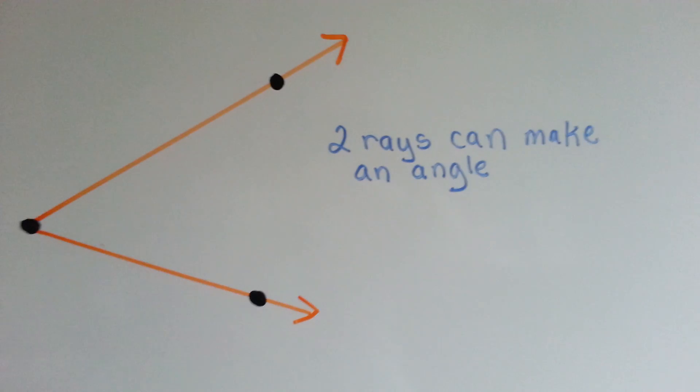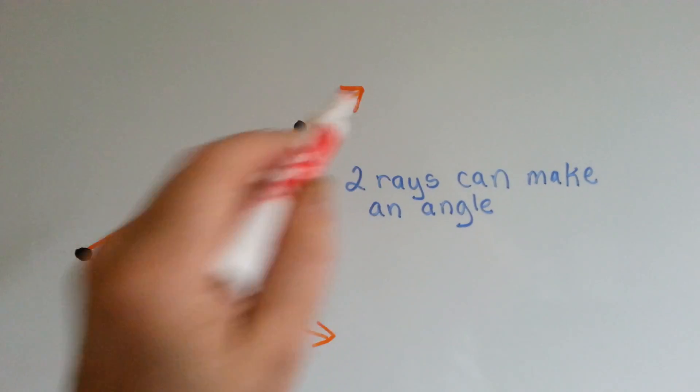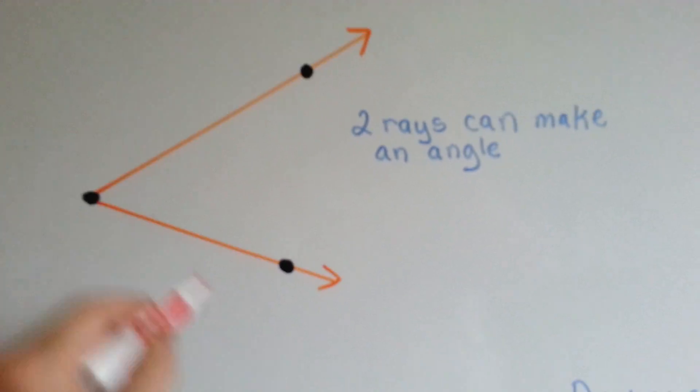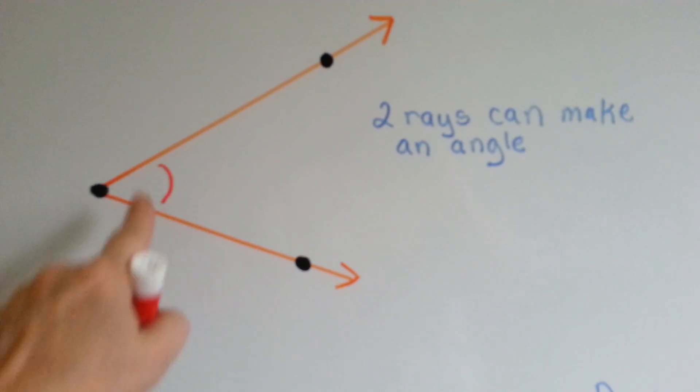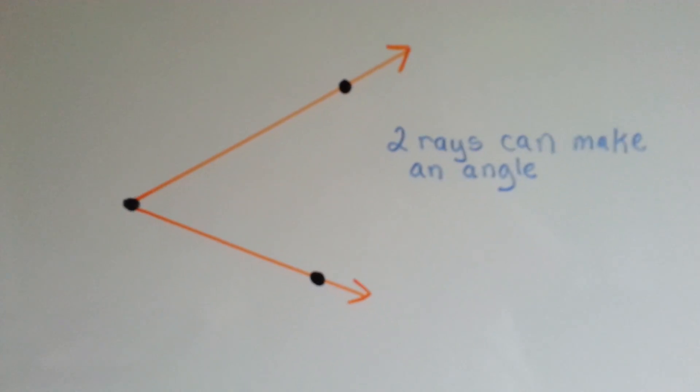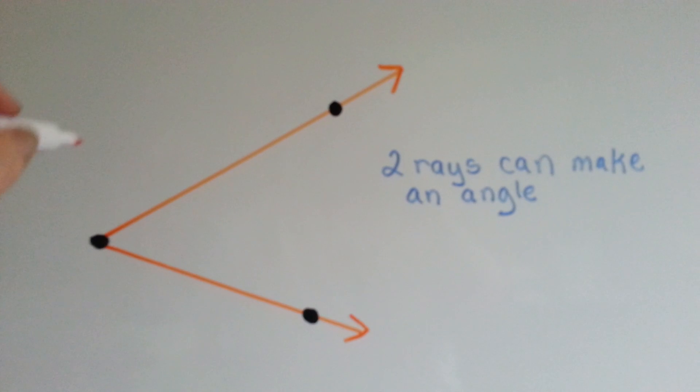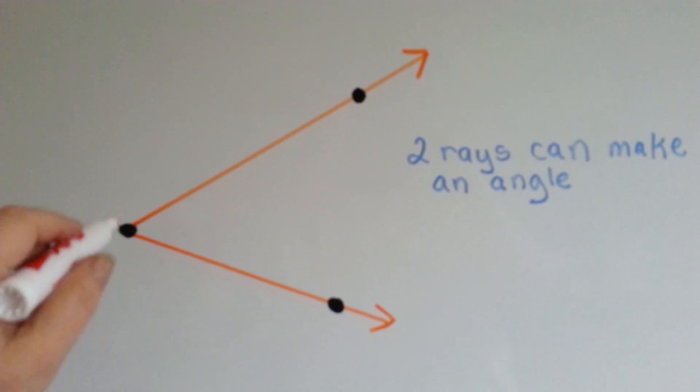Two rays can make an angle. This ray starts here and continues on forever. And this ray starts here and continues on forever. But they made an angle inside, right there. When we label a ray, it's just like labeling the lines and the line segments. The only difference is, if there's a point that meets in the middle, we want that one to have a middle letter.